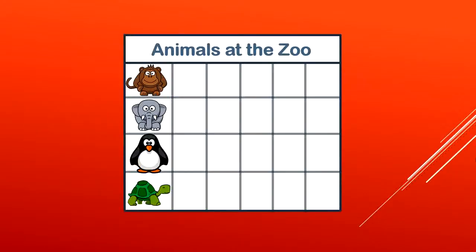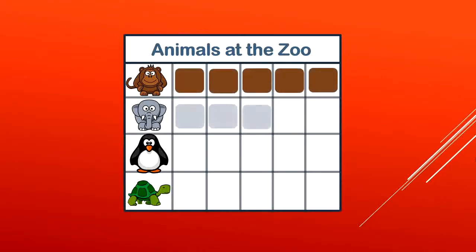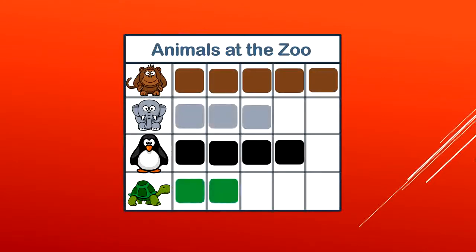This bar graph for animals at the zoo will show us how many monkeys, elephants, penguins, and turtles I saw at the zoo. Here's the information filling in. You can see that each of the animals information is going this direction from left to right.